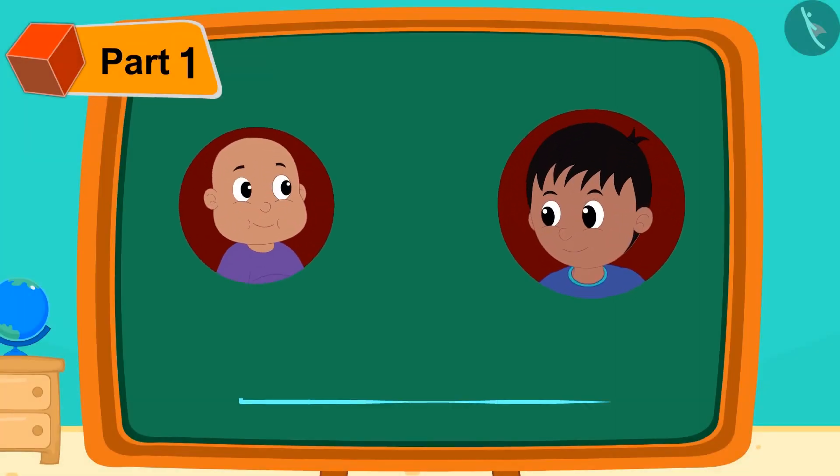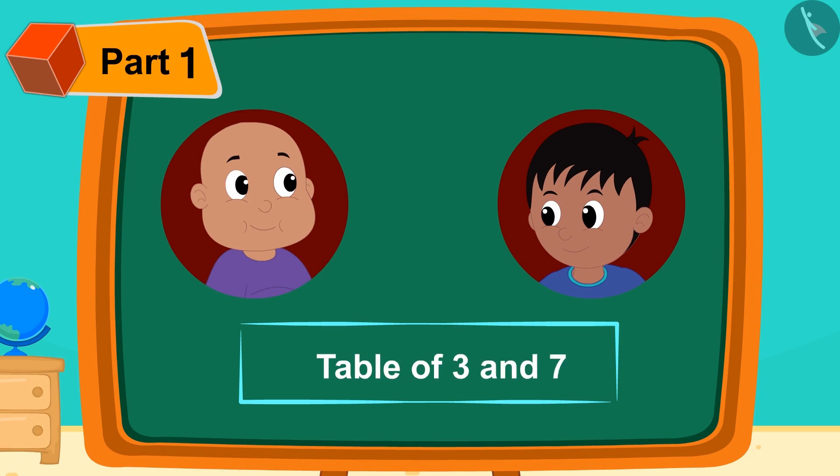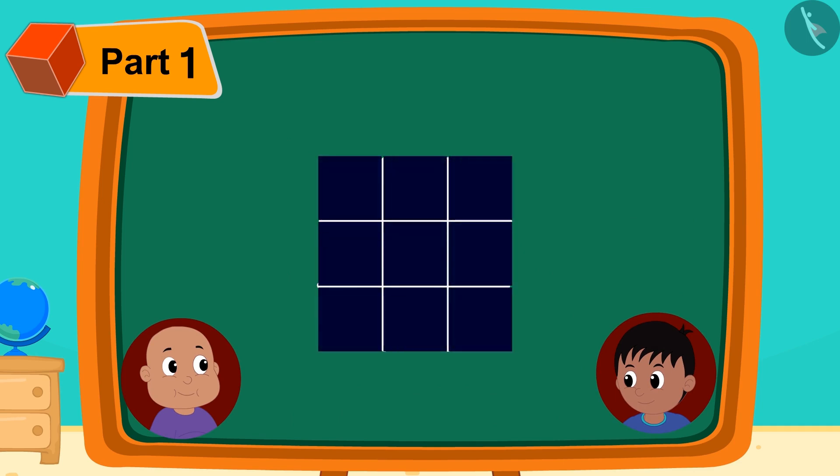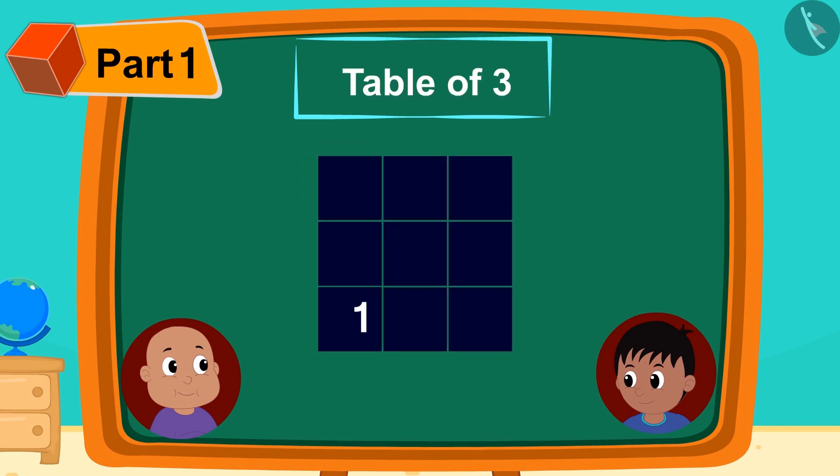Raju tells Bablu that he can also tell him an easy pattern to memorize the tables of 3 and 7. Kids, do you know the game of cross and 0? Raju first designed the game of cross and 0. He wrote the numbers from 1 to 9 in this pattern in the framework.